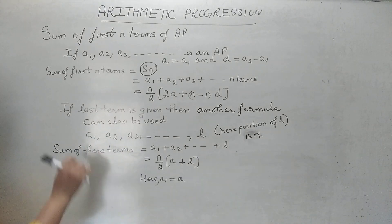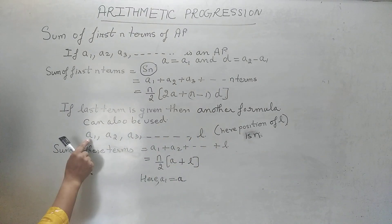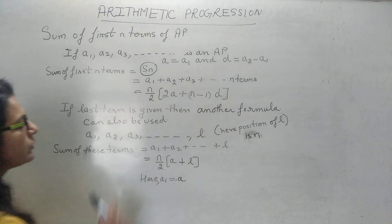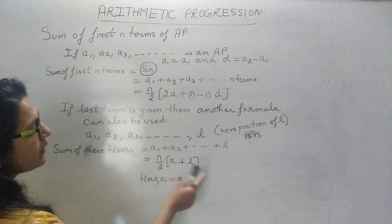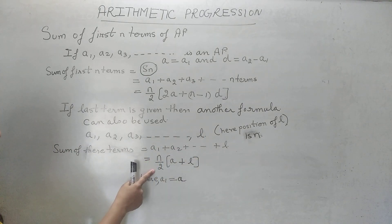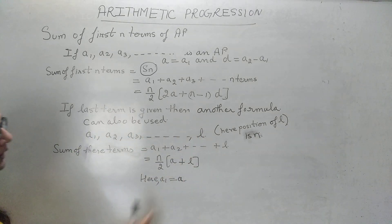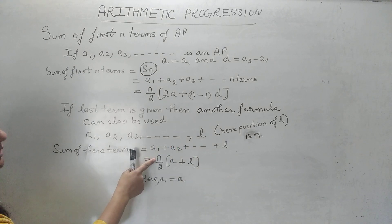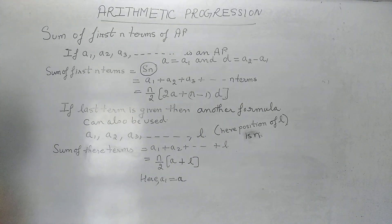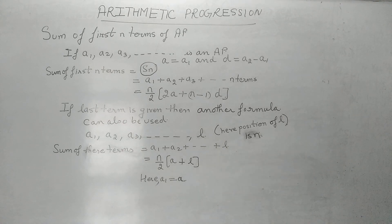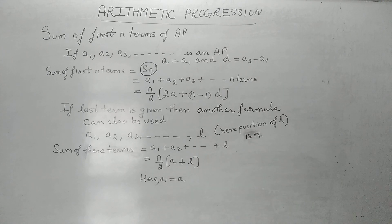So if a sequence is given in which the last term is also given and we are asked to add all of them, we apply the formula: Sn = n/2 × (a + l), where a is the first term and l is the last term. For this formula, n is always the position of the last term. There are two formulas — the first formula can be used for both types, but the last-term formula can be used only if the last term is given, otherwise not.